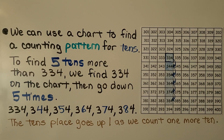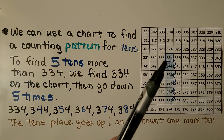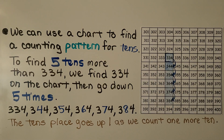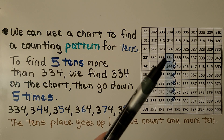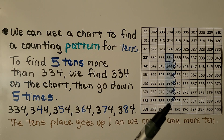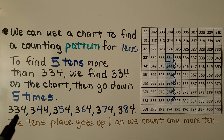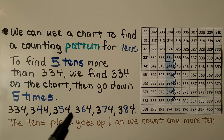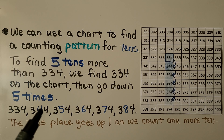We can use a chart to find a counting pattern for 10s. To find 5 tens more than 334, we find 334 on the chart and then go down 5 times: 1, 2, 3, 4, 5. We go from 334 to 344 to 354. Do you see what's happening with the 10s place? It's going 3, 4, 5, 6, 7, 8.